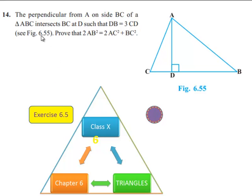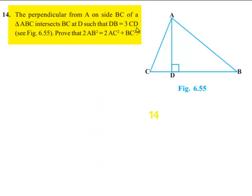Moving on to the 14th question: the perpendicular from A on side BC of a triangle ABC intersects BC at D such that DB is equal to 3 times CD. Prove that 2 times AB square is equal to 2 times AC square plus BC square.